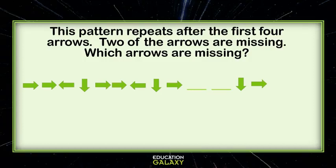We know it's a repeating pattern. So we have right, right, left, down. And then it repeats: right, right, left, down.